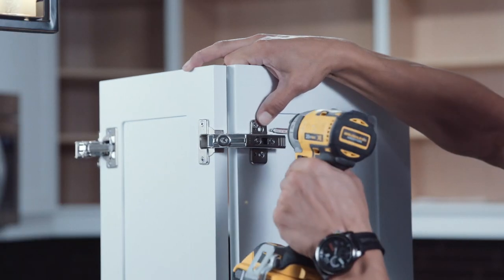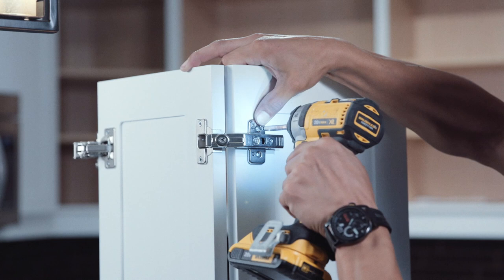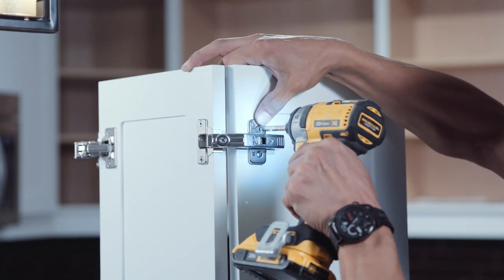Screw the hinge plates to the second door ensuring the doors are aligned top and bottom and the gap between the doors is consistent.